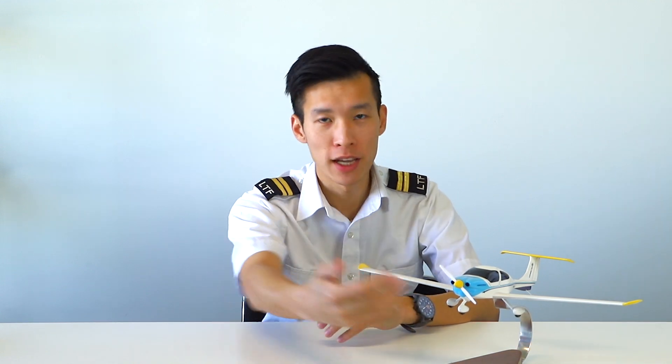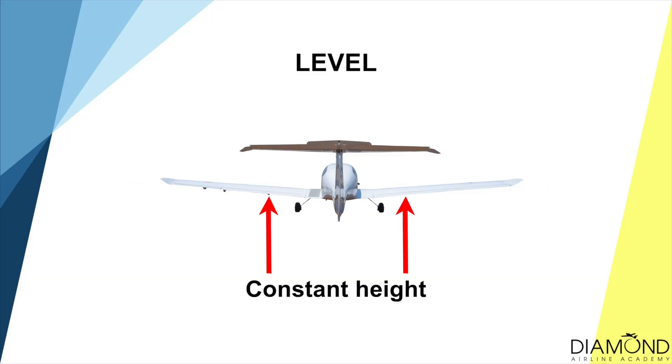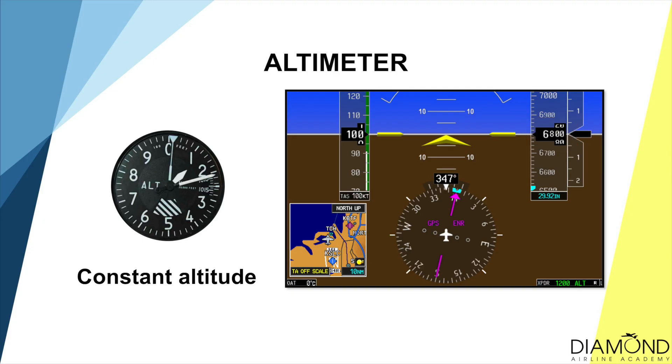Secondly, level. When we talk about level it has two meanings. The first meaning is the wings have to be level. The second meaning is we're not trying to climb or descend — we're trying to maintain the same height. And how do we know we're maintaining the same height when we're flying? We can refer to the altimeter. Pretty much like the heading, we just have to maintain a constant value on the altimeter.